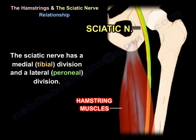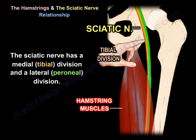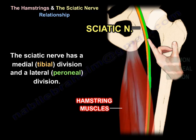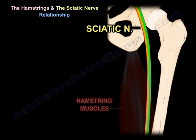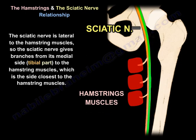That nerve has two divisions: a tibial division, which is the medial part, and a common peroneal division, which is the lateral part. The sciatic nerve is lateral to the hamstring muscles, so the sciatic nerve gives branches from its medial side — the tibial part — to the hamstring muscles. This is the side that is close to the muscles.